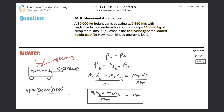So it's just 30,000 multiplied by 0.85, divided by the total mass — which is the mass of the freight car plus the mass of the scrap metal. Plugging into the calculator: 30,000 times 0.85, all divided by 30,000 plus 110,000. We get a final velocity of 0.182 meters per second.